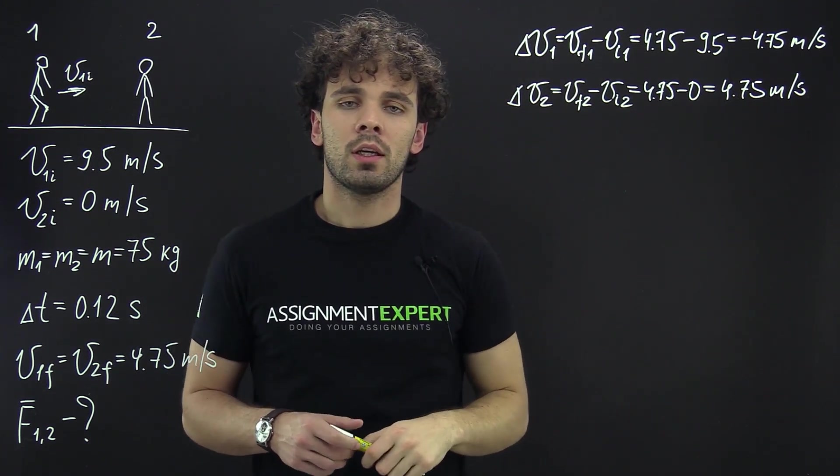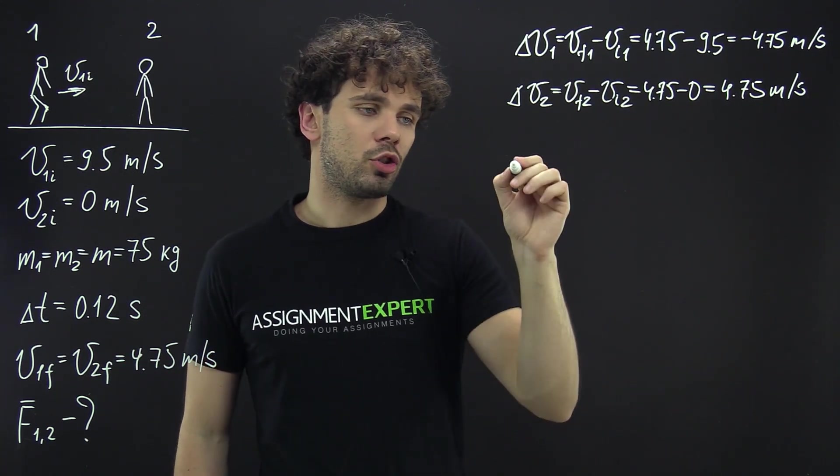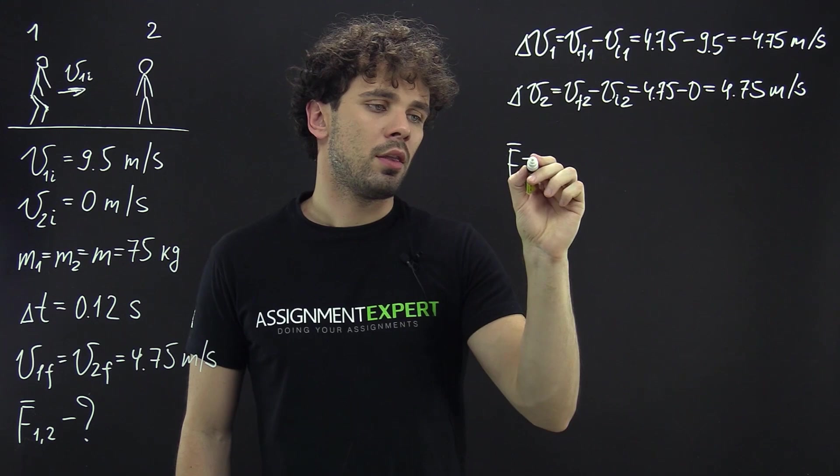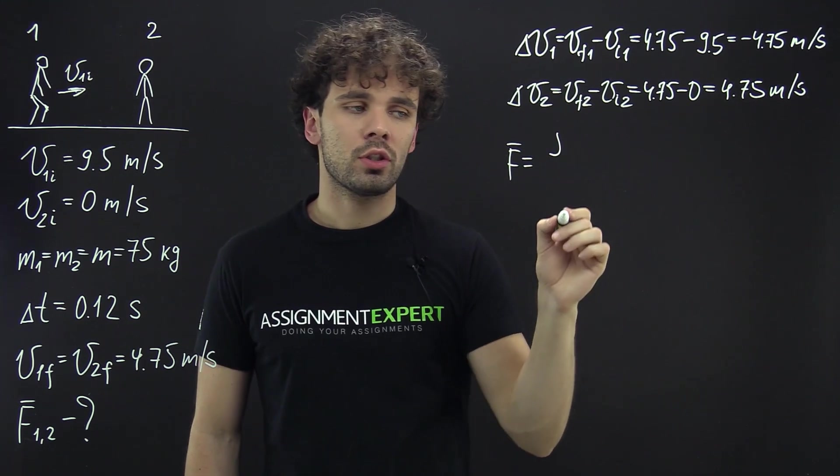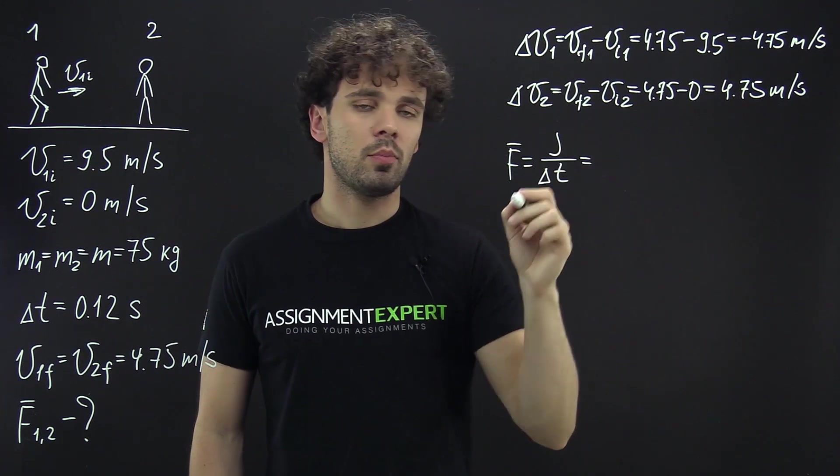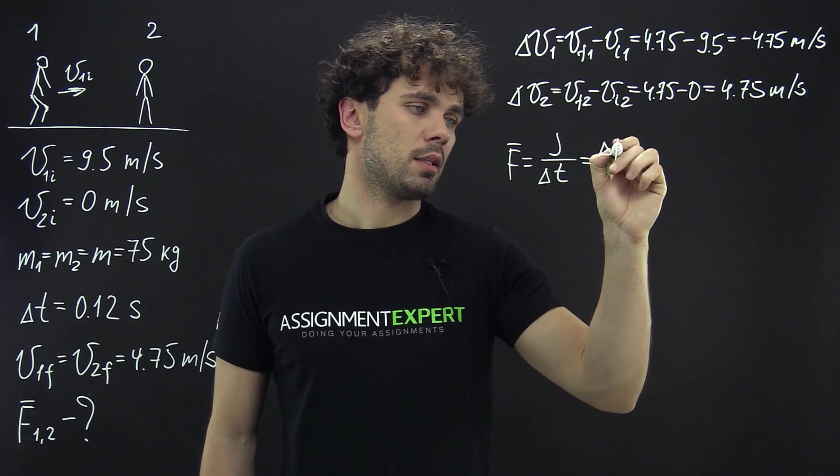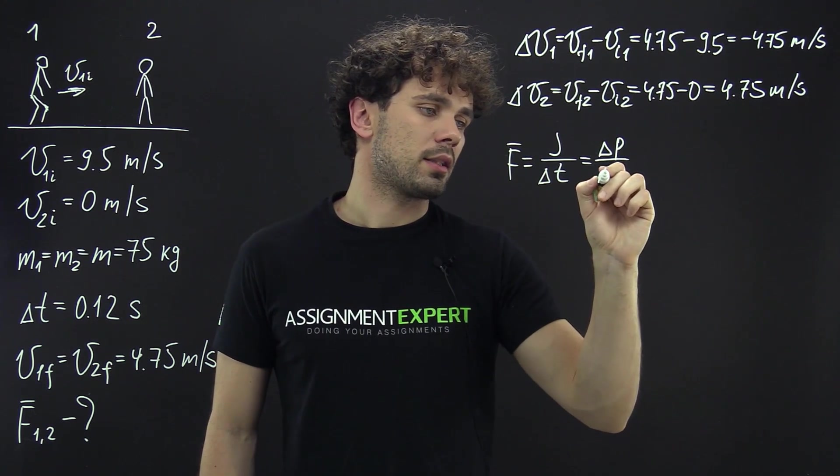Okay, now let's recall what is the average force experienced by the object. This is actually the impulse imparted to the object in a certain time period. And impulse is just the change of the momentum of the object. So we have delta P over delta T.